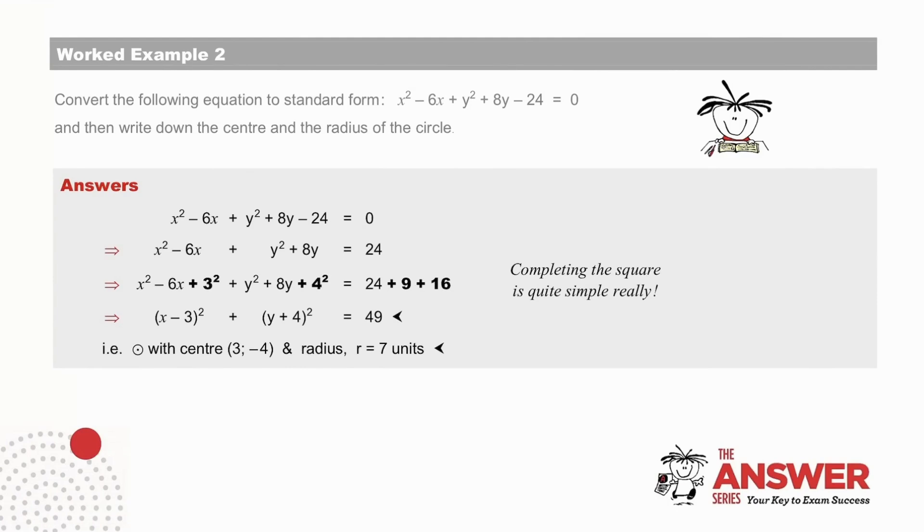Pause to check worked example 2. The equation in general form. The constant term, -24, placed on the right-hand side. And the completion of the squares. Half of 6 is 3, squared. Half of 8 is 4, squared. So we add 9 and 16, and what we do on the left-hand side of the equation, we also do on the right-hand side. We add 9 and 16.